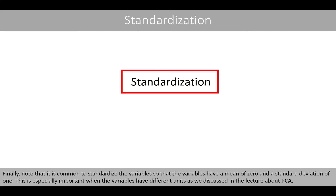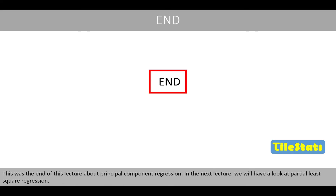Finally, note that it is common to standardize the variables so they have a mean of 0 and a standard deviation of 1. This is especially important when variables have different units, as discussed in the PCA lectures. This concludes the lecture on principal component regression; the next lecture will cover partial least-squares regression.